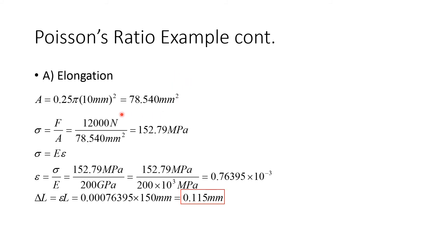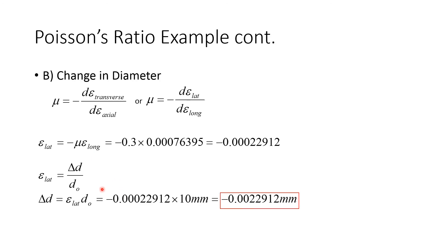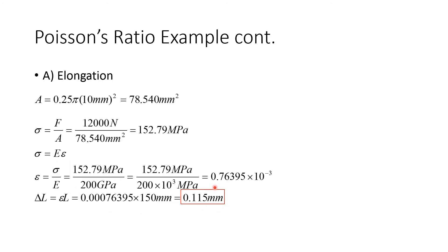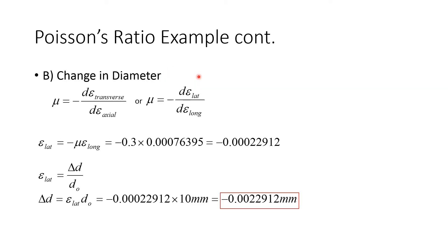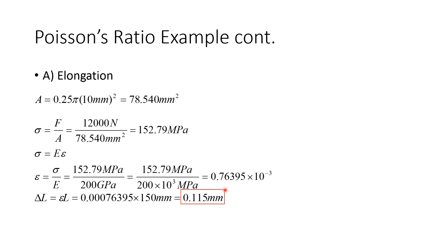Alright, so using Poisson's ratio, we have now solved the problem. We have the change in diameter. So you see here that the change in diameter is actually pretty small compared to the elongation.